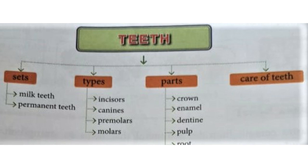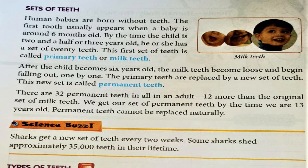We all have teeth. But does the newborn child have teeth? No. Human babies are born without teeth. But by the age of 2 to 3 years, they have about 20 teeth.